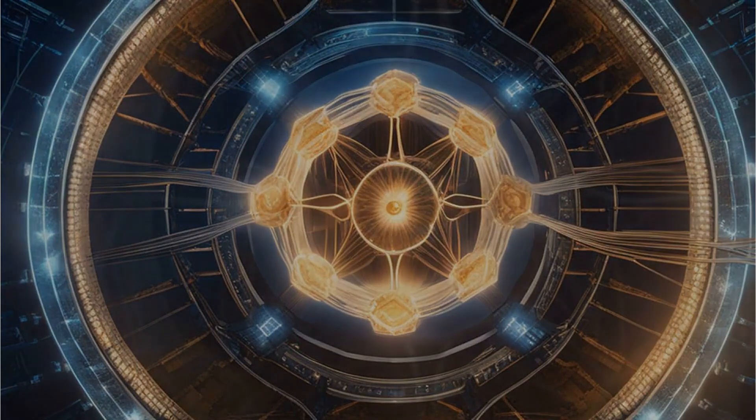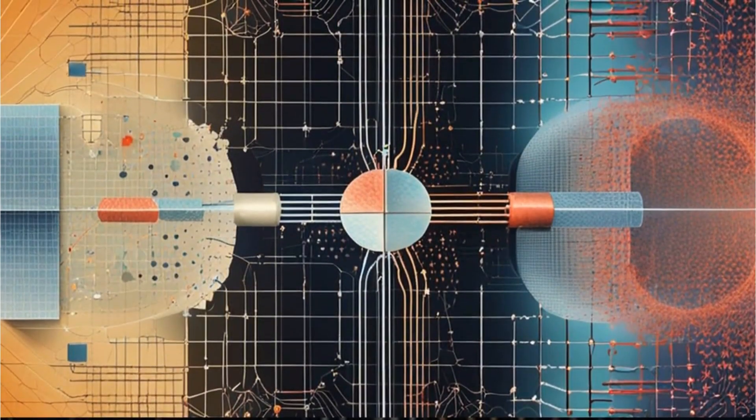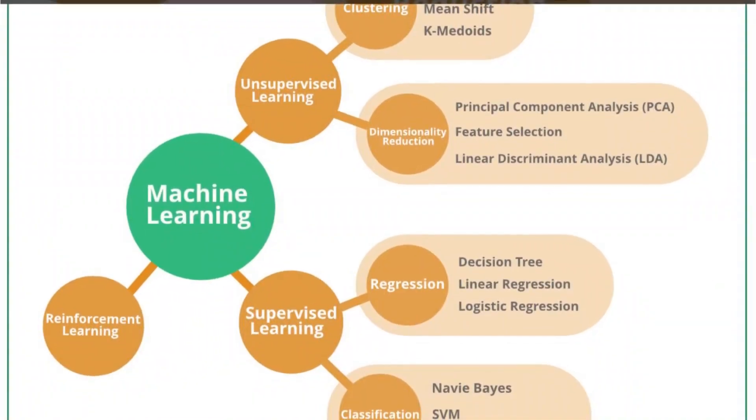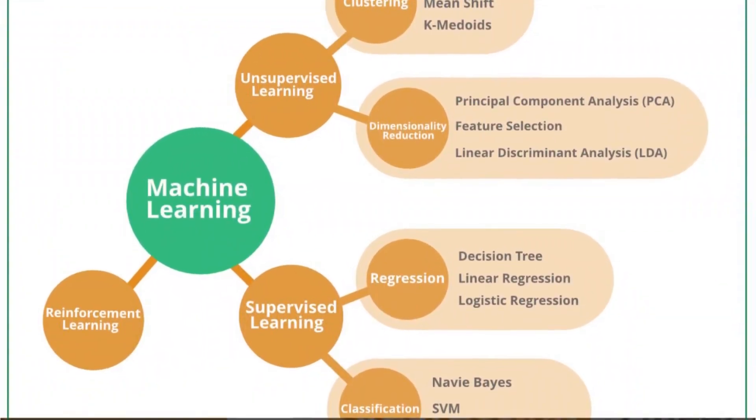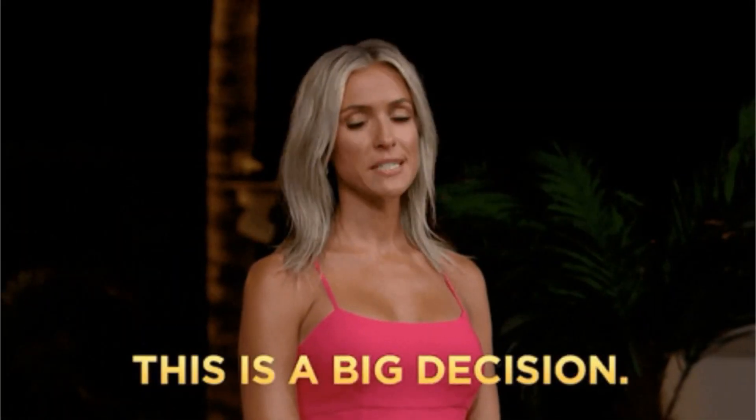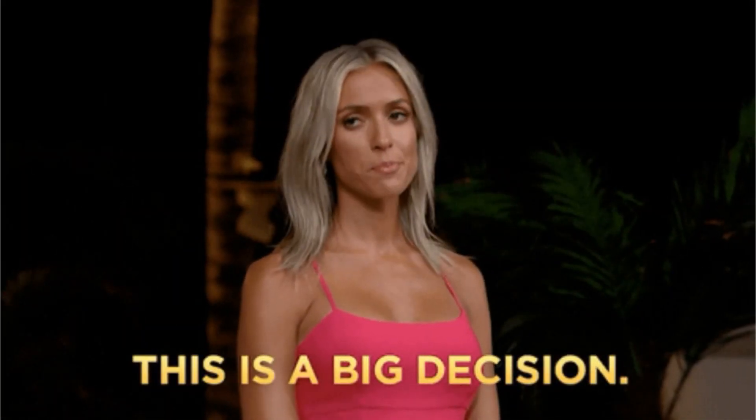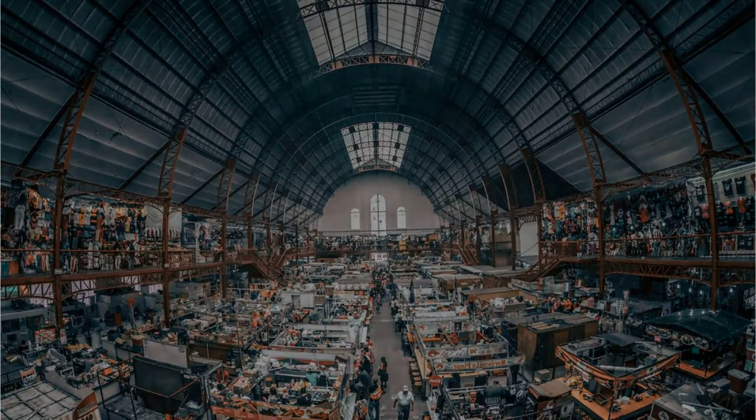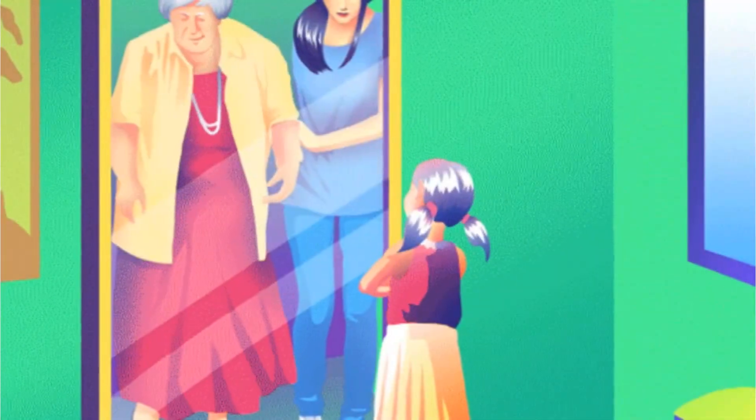On the other hand, Predictive AI is all about forecasting or predicting future events based on historical data. It uses statistical models and machine learning algorithms to analyze patterns and make accurate predictions. It helps businesses make better decisions by providing insights into consumer behavior, market trends, and potential risks. Predictive AI has proven invaluable in fields like finance, healthcare, and logistics.